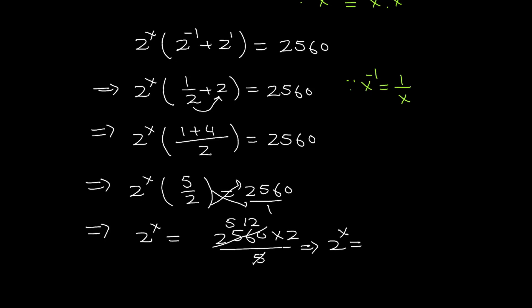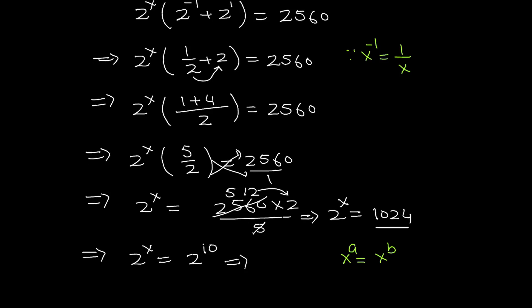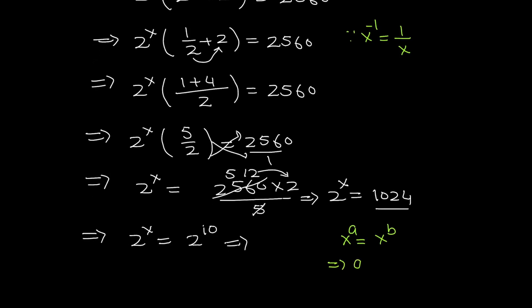Cross-multiplying, 2 raised to the power x equals 2560 times 2 divided by 5. The 5 cancels with 2560 to give 512, and 512 times 2 is 1024. So 2 raised to the power x equals 1024, which can be written as 2 raised to the power 10. Since the bases are the same we equate the powers, so x equals 10. This is my final answer. I hope you like both the methods. Thanks for watching.